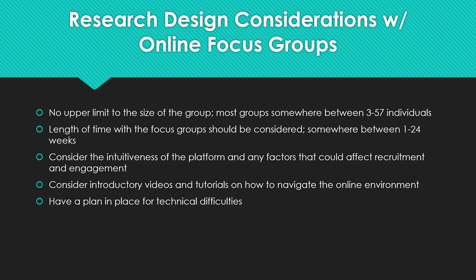A second issue to consider is how long the focus group should be. An asynchronous focus group can range from one to 24 weeks, with a mean duration of nine weeks. Focus groups going up to 24 weeks are rare, and the average duration is probably four weeks. Factors to consider regarding length include the questions in the protocol guide, how the group will be structured, and the specific research questions underpinning the work.